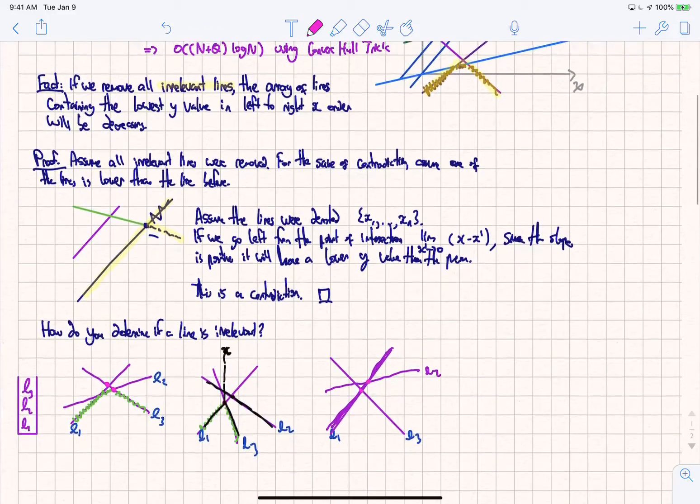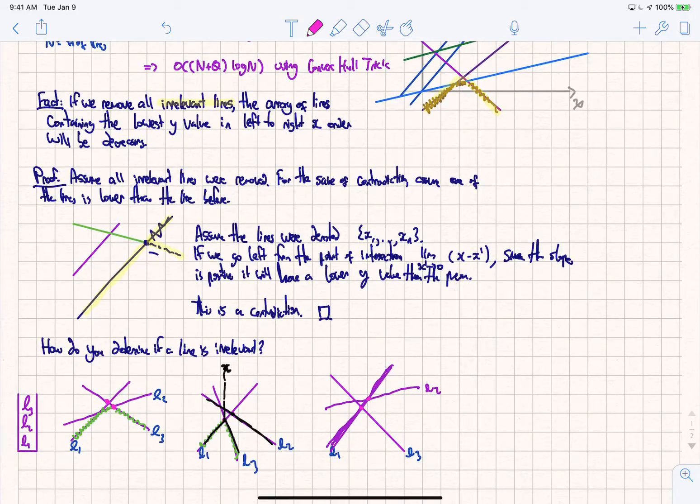Now the tricky part is how do we process our lines to show that a line is irrelevant? Now to show that a line is irrelevant, the way we're going to do this is we're going to first sort all the lines in decreasing order. After sorting all the lines in decreasing order, we're going to have lines like L1, L2, L3. So consider Li, Li plus 1, and Li plus 2. Graph Li, Li plus 1, Li plus 2, so for this case we're just going to say it's L1, L2, L3...